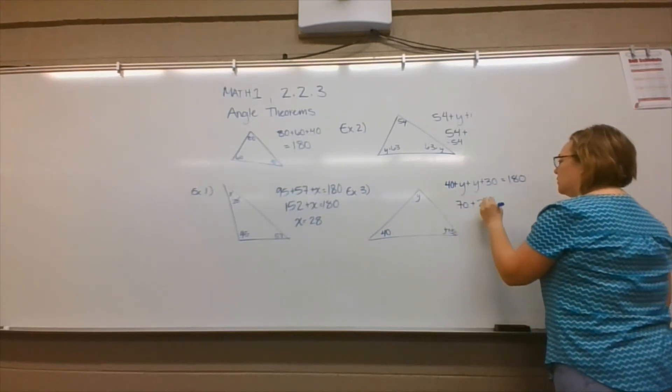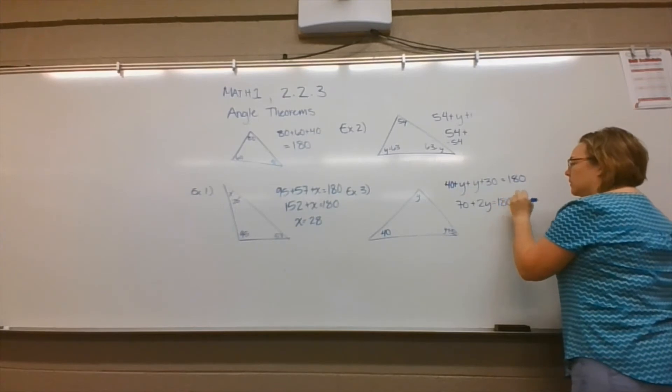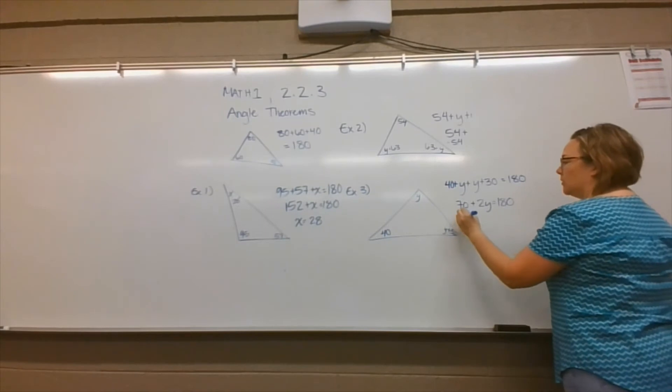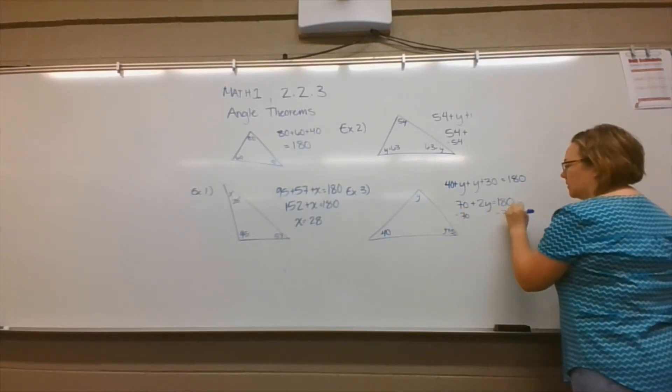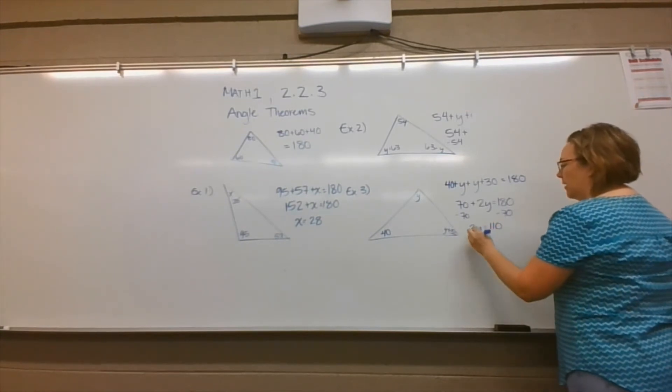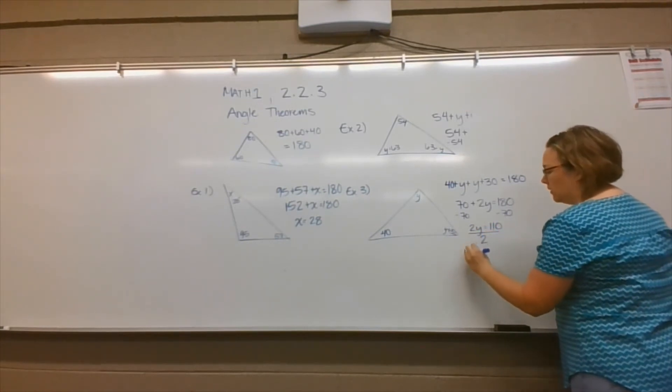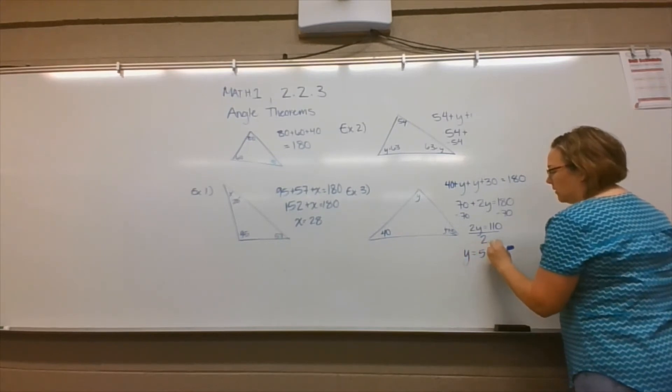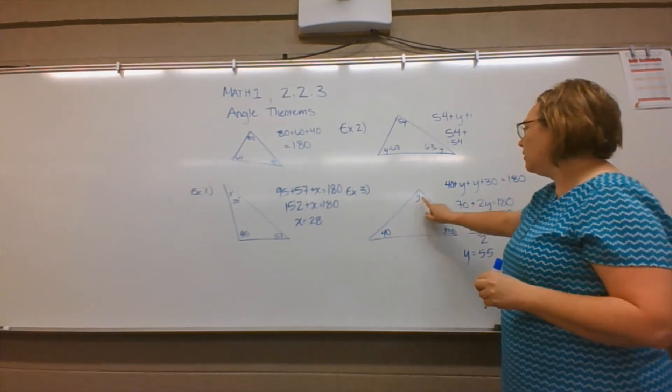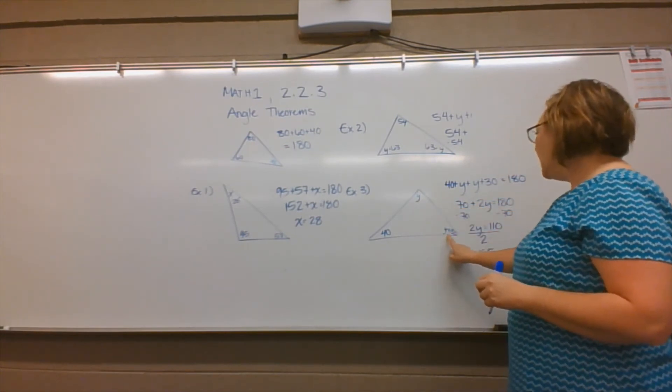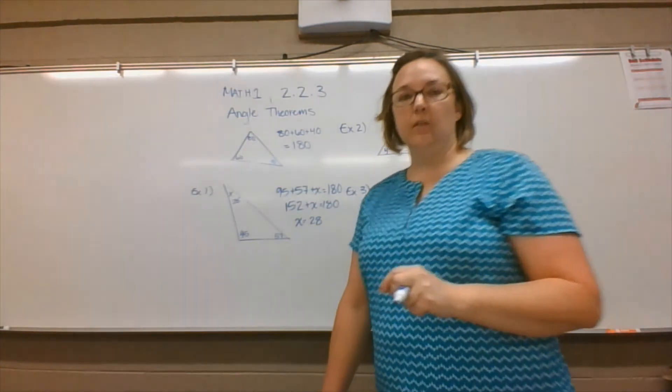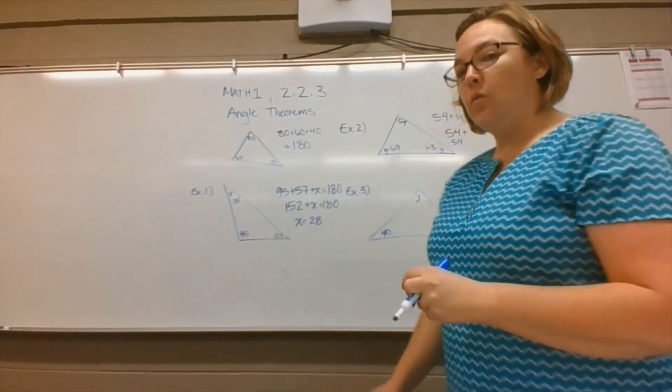We will solve for y just like we did on these prior examples. We subtract 70, so 2y equals 110. Now I divide by 2, and y equals 55. So y is 55 degrees. We have a 40 degree angle, a 55 degree angle, and a 55 plus 30 which is 85 degree angle. These are a few examples that you will see on your quiz.